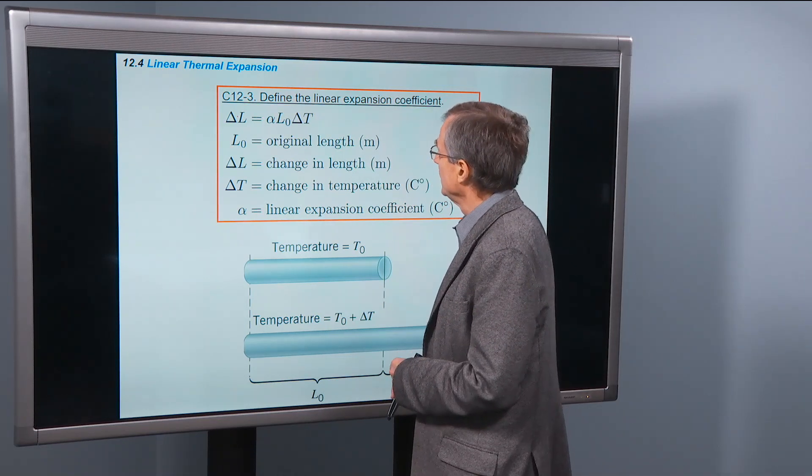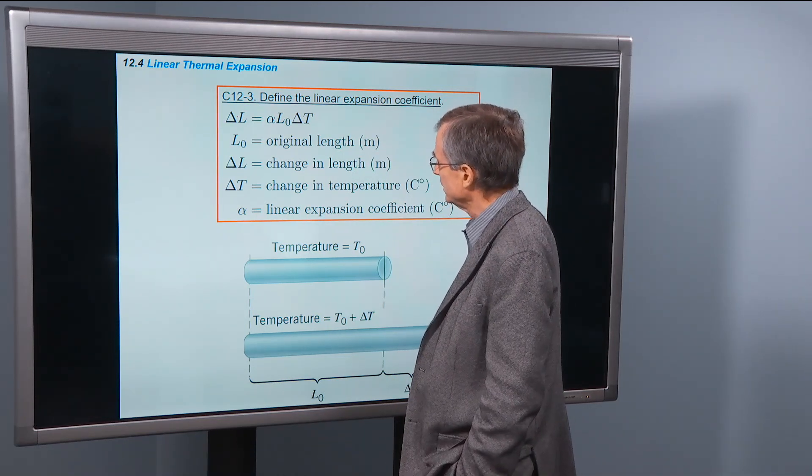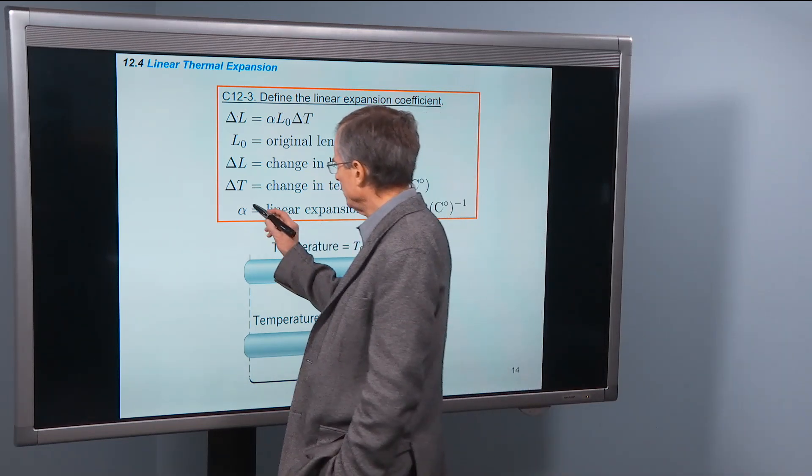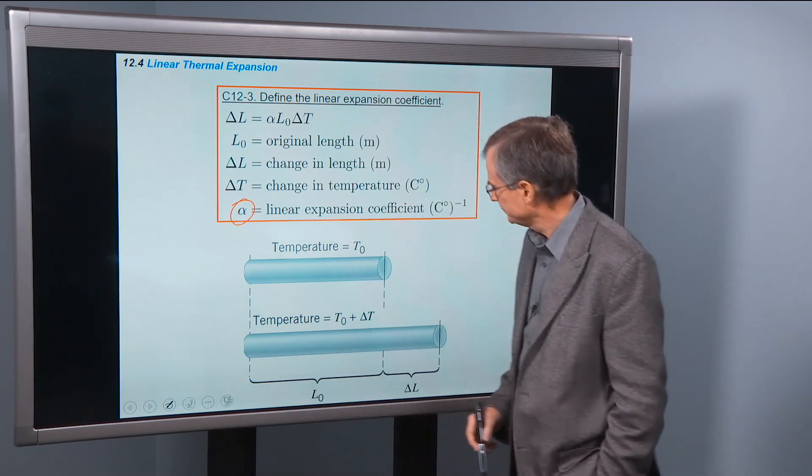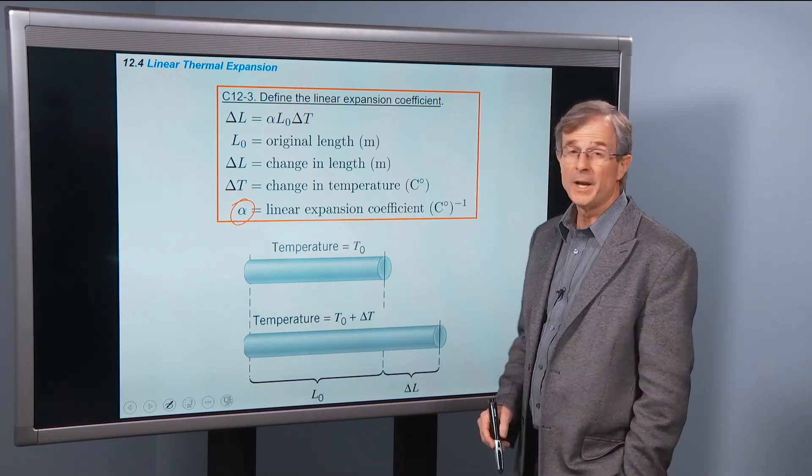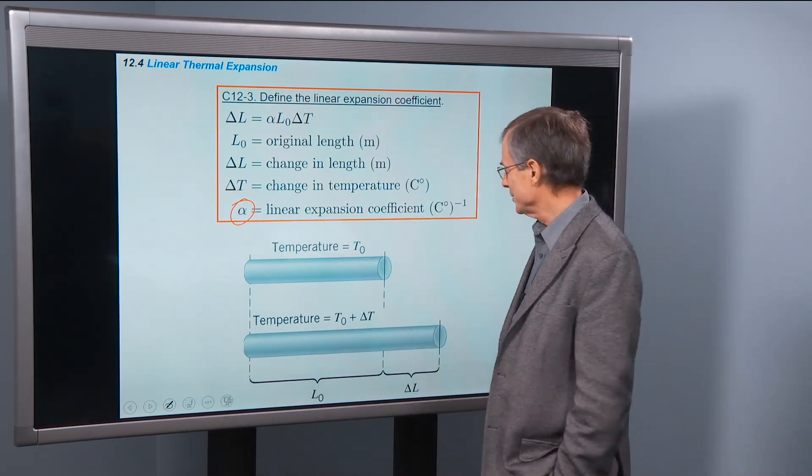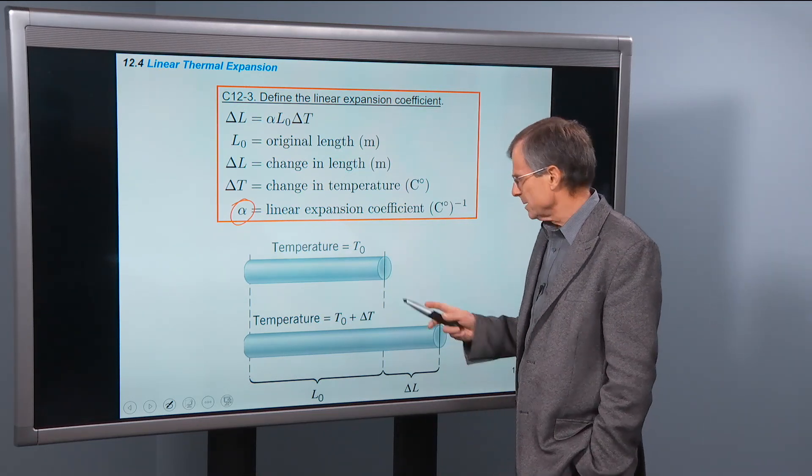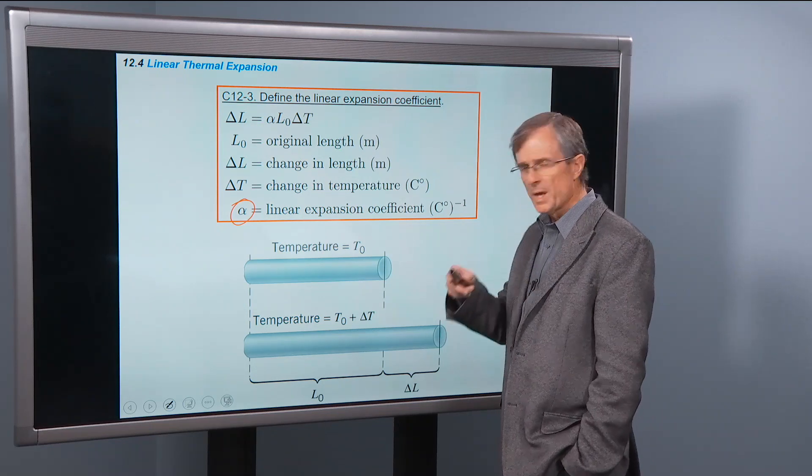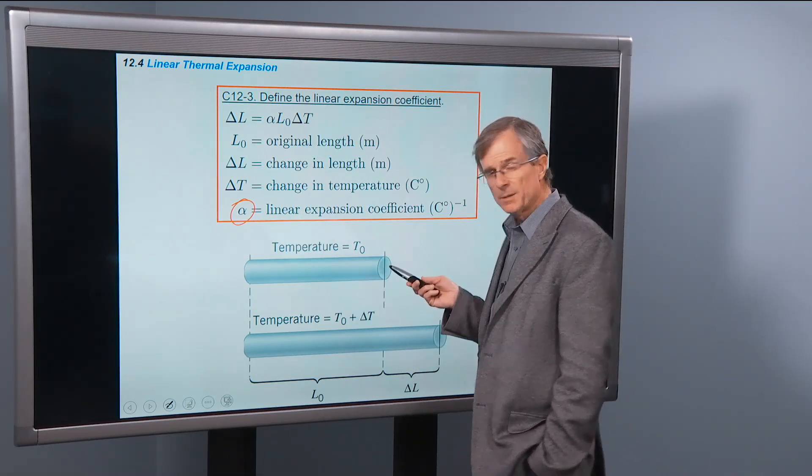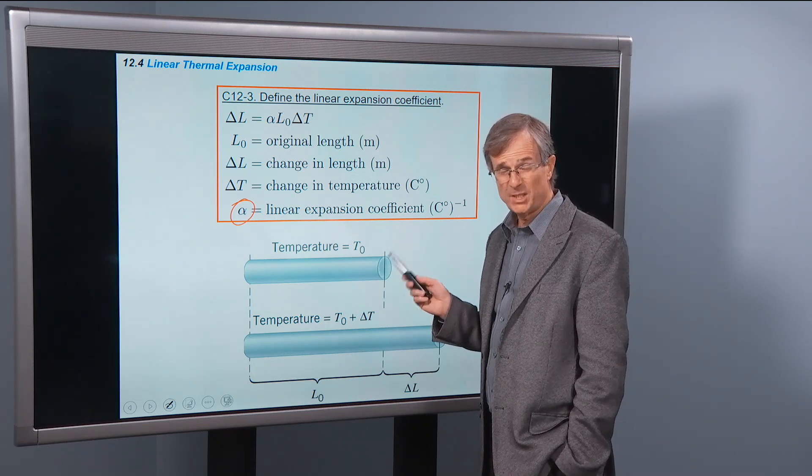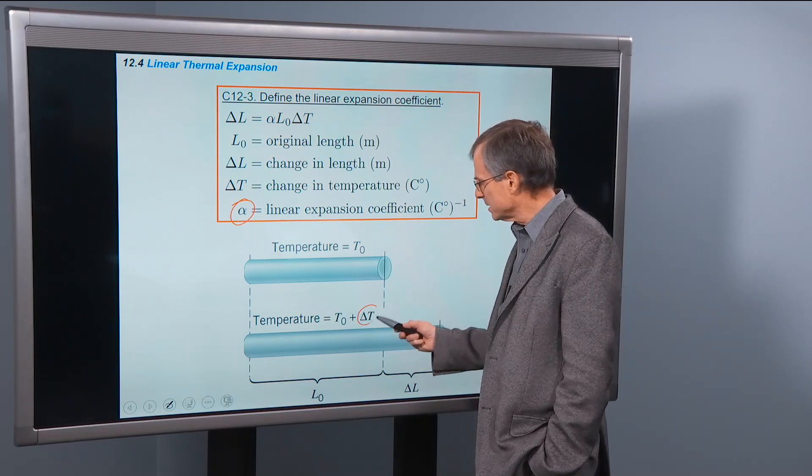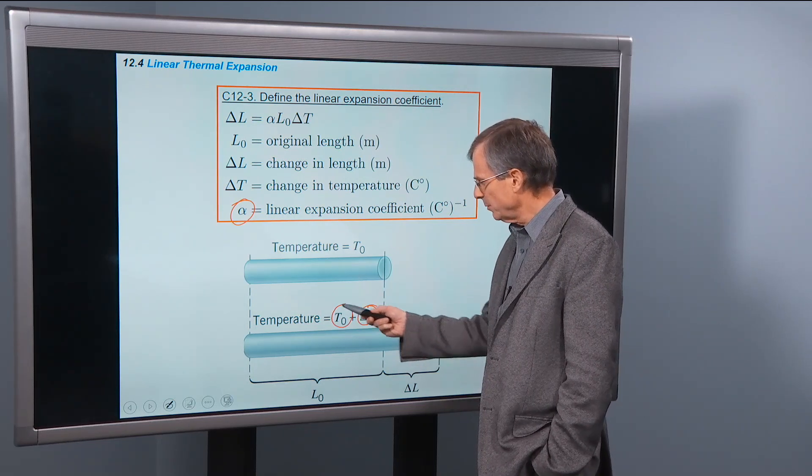The linear expansion coefficient, alpha, is what we're going to define right now. I don't know why we use alpha for that, but that's just what we use. So the idea is this: you've got a metal bar, say, at some temperature T0, the initial temperature. Then you heat it up. You add some temperature to the original temperature.